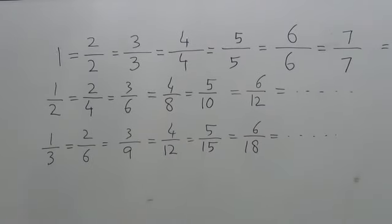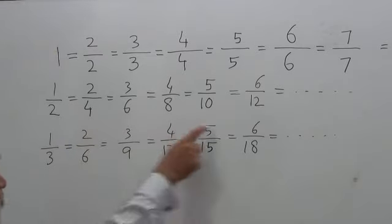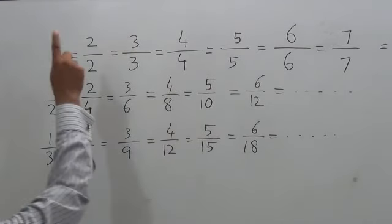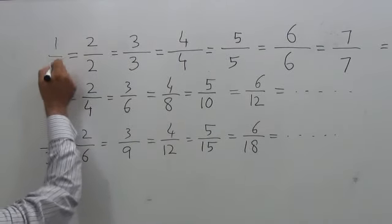Now you can see a very interesting relationship. In the numerator, I have one, two, three, four, five, six, one, two, three, four, five, six. And even this I can write as one over one.